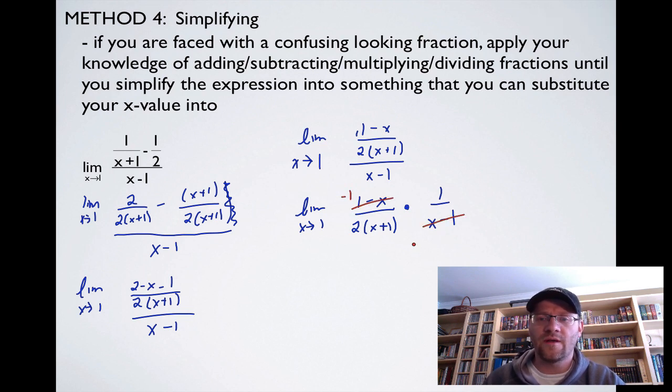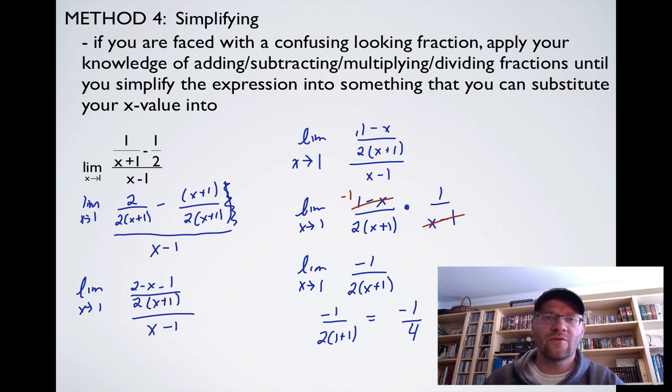I have (1 minus x) all over (2x plus 1). And now I'm going to be multiplying by the reciprocal of x minus 1. Now you have to recognize that (1 minus x) and (x minus 1) are actually opposites of each other. So when two opposites cancel out, you're left with a negative 1 as a result. Now I can write down my limit again. I have negative 1 on the top and I have 2 divided by (x plus 1) on the bottom. And now when I look at this, I can substitute in my x equals 1 because I'm not going to get 0 in the bottom anymore. I now get negative 1 over 2 times (1 plus 1). That's negative 1 over 4. So that just means as x approaches 1 of this very confusing rational function, the height of that graph is approaching 1 quarter.